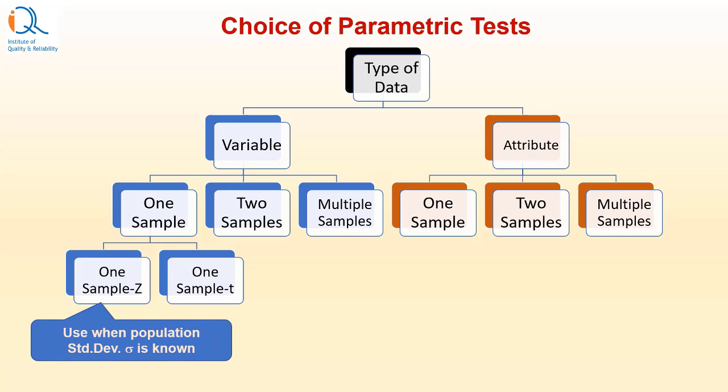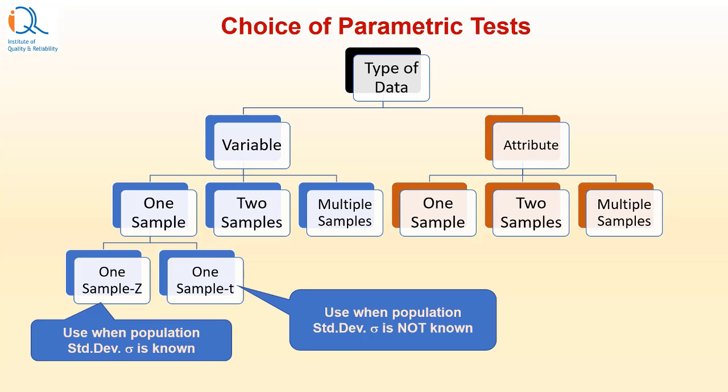When the population standard deviation sigma is known, then only you can use the one sample Z-Test. And when population standard deviation sigma is not known, then use the one sample T that uses the student's T distribution. And we will discuss this one sample T-Test in this video.